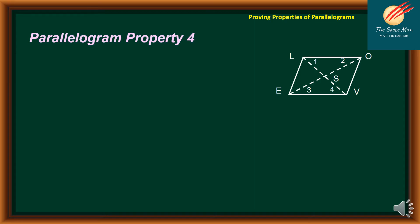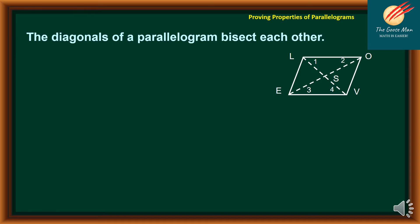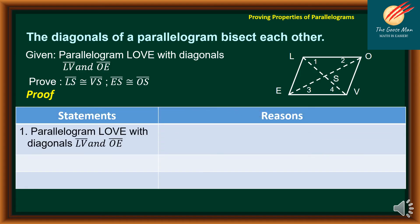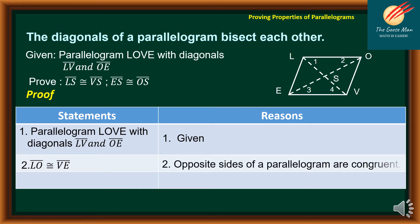Let's move on to the fourth property of a parallelogram: diagonals of a parallelogram bisect each other. For our given parallelogram LOBE with diagonals LB and OE, we would like to prove that line segment LS is congruent to line segment BS, as well as line segment ES is congruent to line segment OS. For statement number one, parallelogram LOBE with diagonals LB and OE — reason is given. For number two, line segment LO is congruent to line segment BE because opposite sides of a parallelogram are congruent. For number three, line segment LO is parallel to line segment BE — definition of parallelogram.